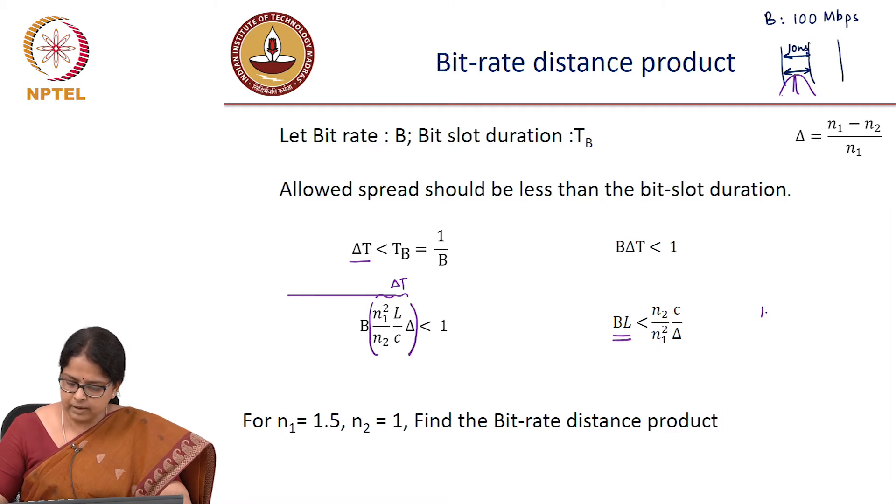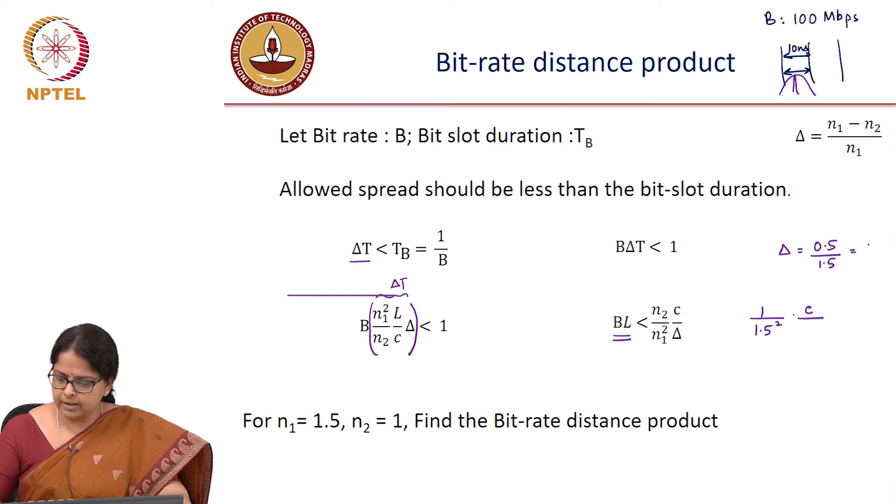So this is 1 divided by 1.5 square C over the delta is N1 minus N2 by N1 which is 0.5 by 1.5, which is 4 into 10 power 8. What is the unit? Bit rate bits per second distance meter. So I can write it as 400 megabits per second meter which is 0.4 megabits per second kilometer.